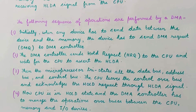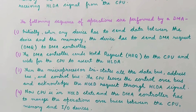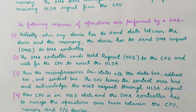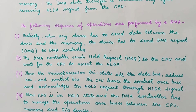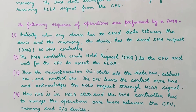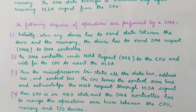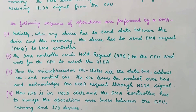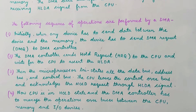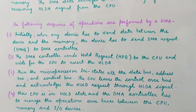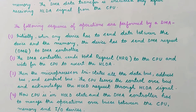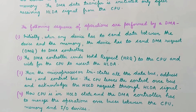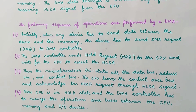Actually, DMA is a process of communication through which data transfer occurs between the memory and the input/output. The process is controlled by an external circuit called the DMA controller. This DMA controller manages the data transfer between the memory and the input/output. The HLD and HLDA pins are used for DMA operations.